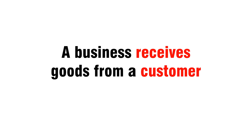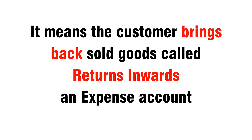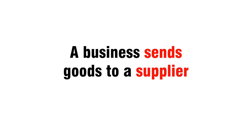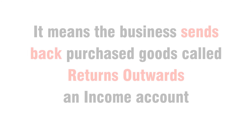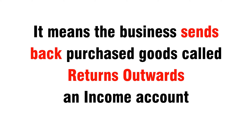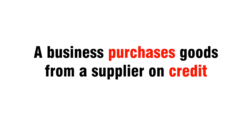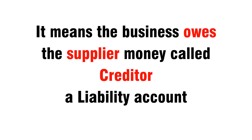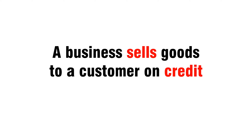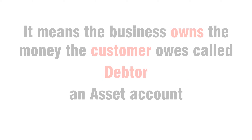A business receives goods from a customer — it means the customer brings back sold goods, called returns inwards, an expense account. A business sends goods to a supplier — it means the business sends back purchased goods, called returns outwards, an income account. A business purchases goods from a supplier on credit — it means the business owes the supplier money, called creditor, a liability account.